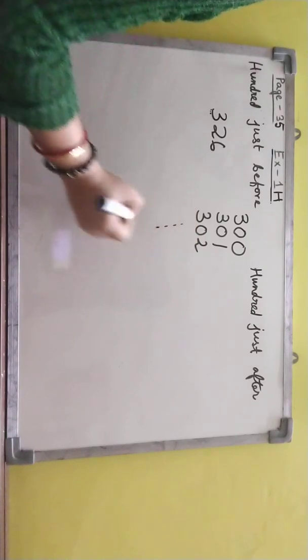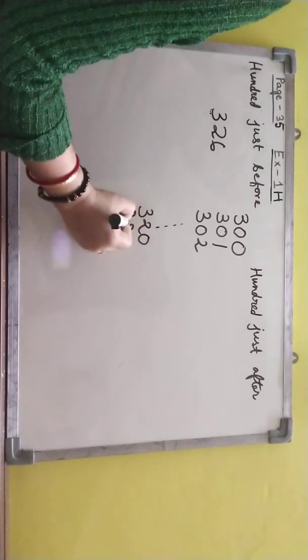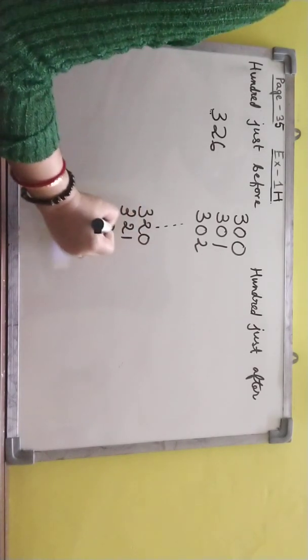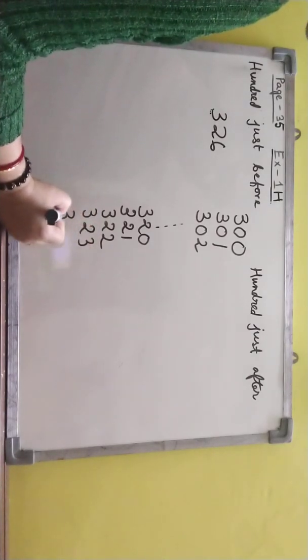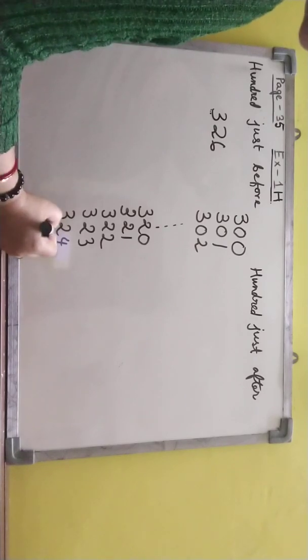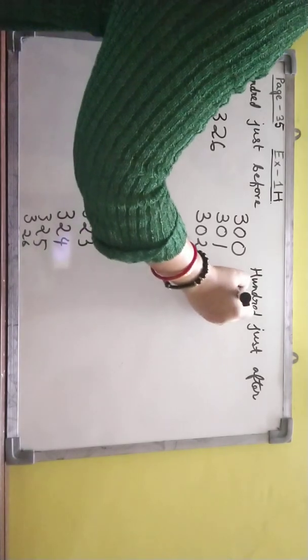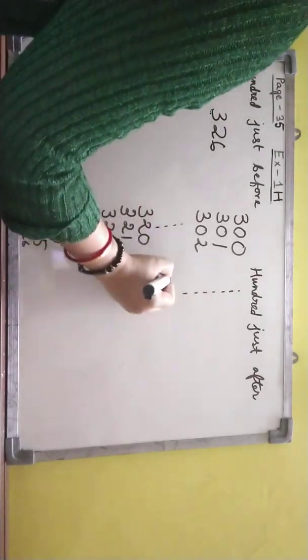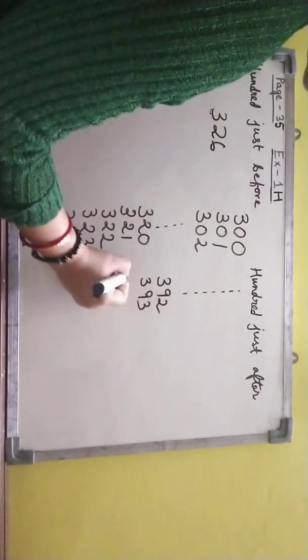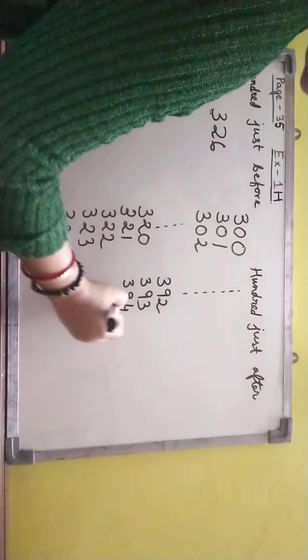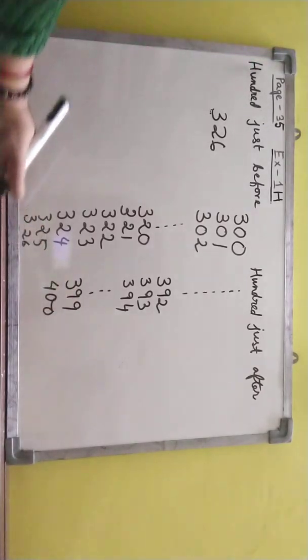So like that then again it will come 320, 321, 322, 323, 324, 325, 326. Then like same if you write like 392, 393, 394, 399, then 400. Like that.